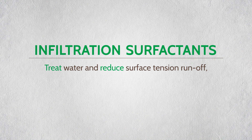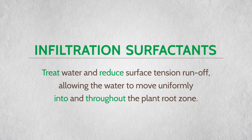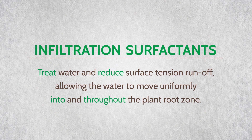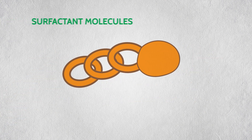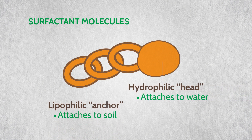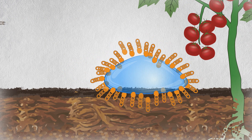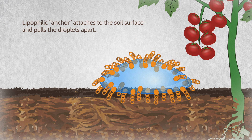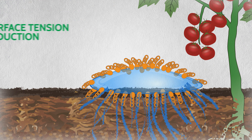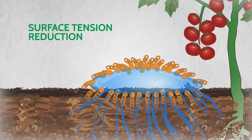Infiltration surfactants treat water and reduce surface tension and runoff, allowing the water to move uniformly into and throughout the plant root zone. Infiltration surfactant molecules have less lipophilic anchor, which attaches to soil, and more hydrophilic head, which attaches to water. When water treated with an infiltration surfactant is applied to the soil, the lipophilic anchor attaches to the soil surface and pulls the droplets apart — this is called surface tension reduction. Surface tension reduction causes water to infiltrate cracks and crevices in the soil and to move throughout the plant root zone.